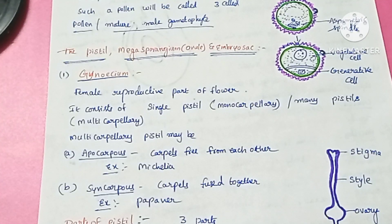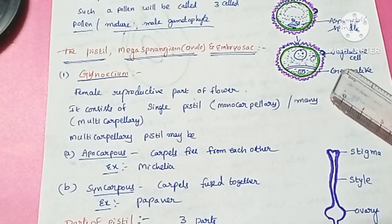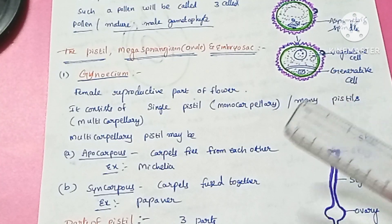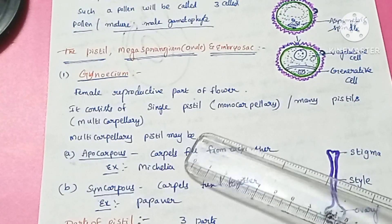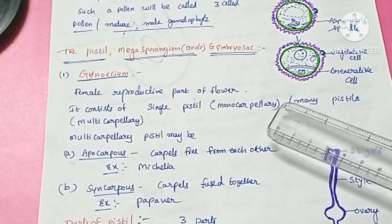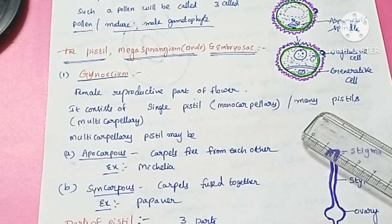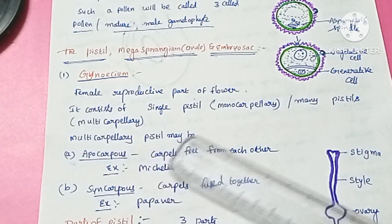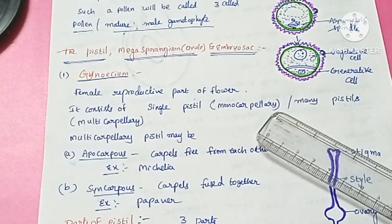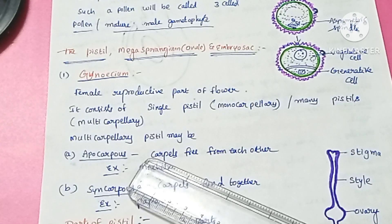Hello everyone, this is Lata Akula. In this video we are going to study about Gynoecium. The Gynoecium is the female reproductive part of the flower. It consists of a single pistil — this condition is called as monocarpillary condition. If it consists of more than one pistil, then this condition is called as multicarpillary condition.